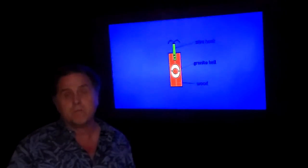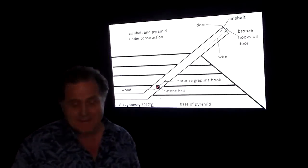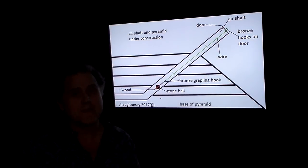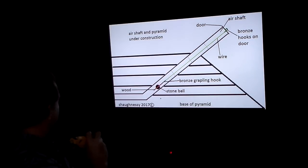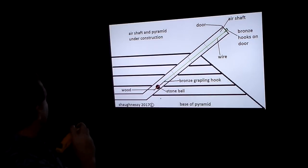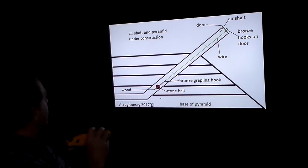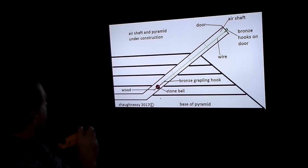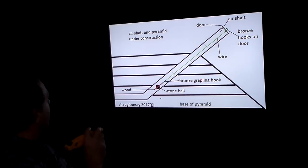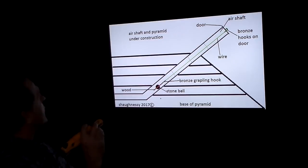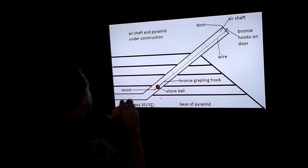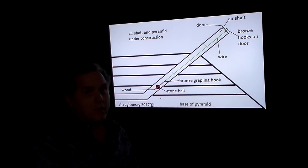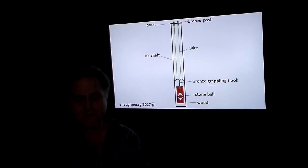That's the wire hook, granite ball, wood plumb bob. I haven't given it a name yet but that's just my theory. This is the air shaft construction—you got the base of the pyramid, the stone ball and wooden roller plumb bob, bronze grappling hook, the door at the top, the air shaft, the bronze hooks on the door, and the wire attached to the hook that goes down to the rolling plumb bob. Pretty simple stuff.